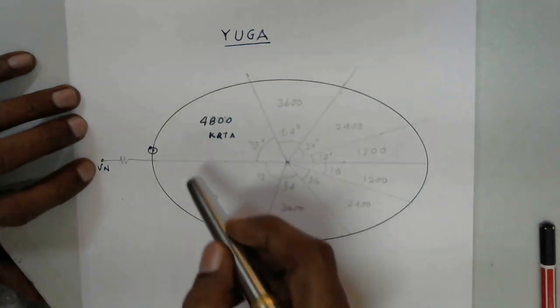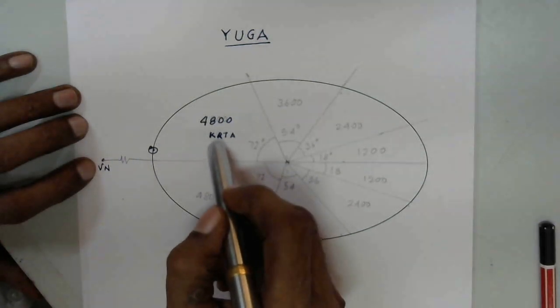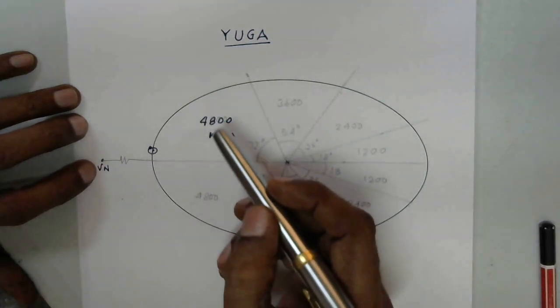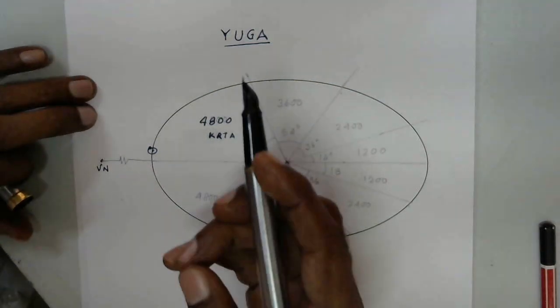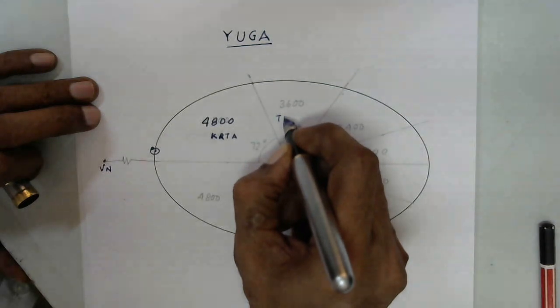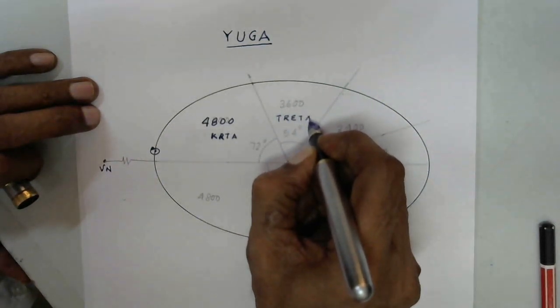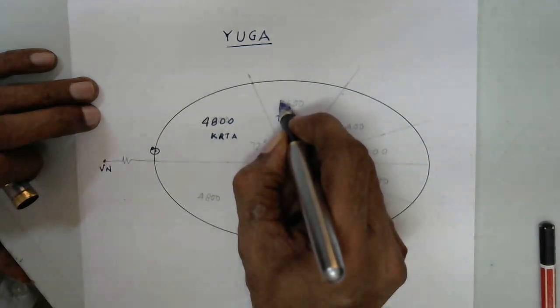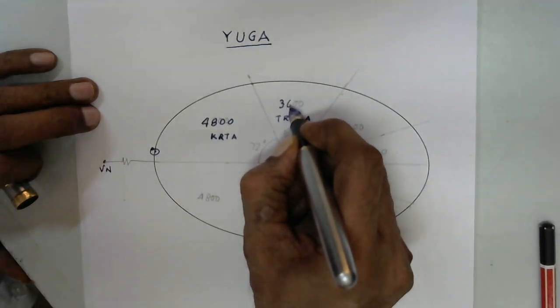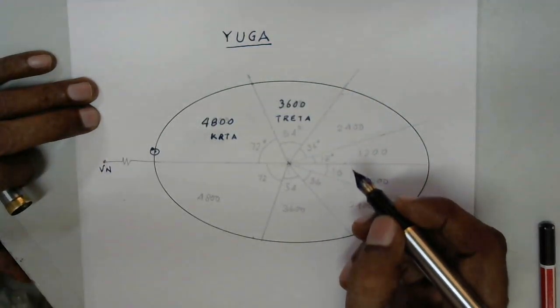Sun has already moved through the Krita Yuga which is 4,800 years, and at this point it changes over to Treta Yuga. This is Treta Yuga which is 3600 years, the period of Sri Rama.